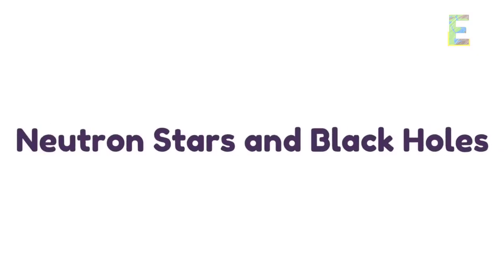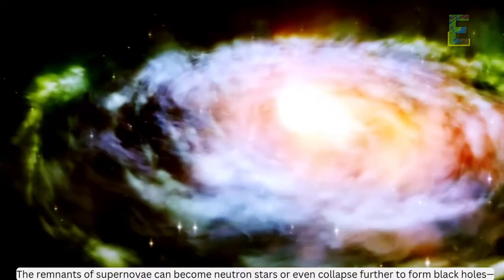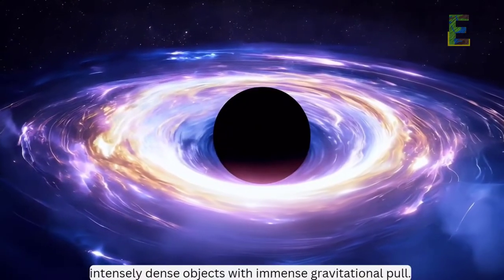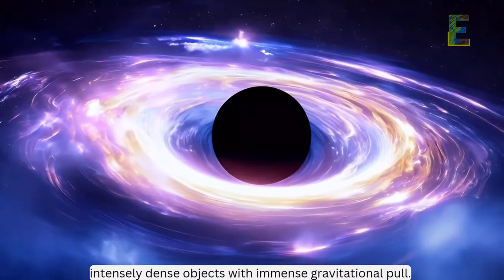Neutron stars and black holes: The remnants of supernovae can become neutron stars or even collapse further to form black holes—intensely dense objects with immense gravitational pull.